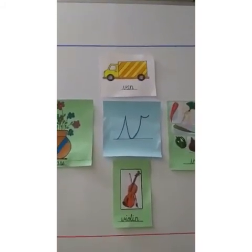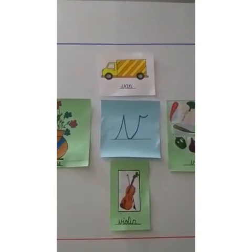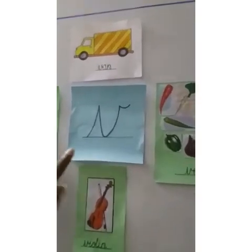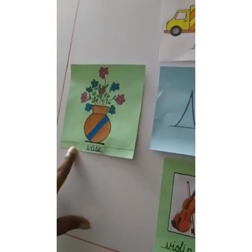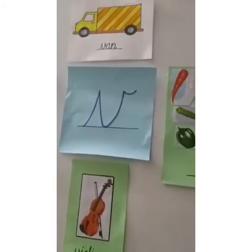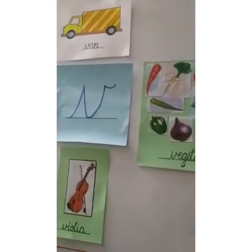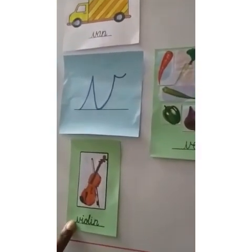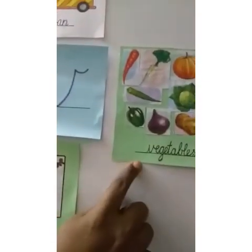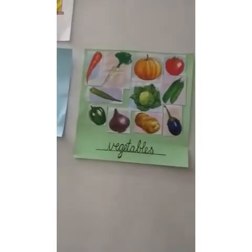So children, once again, we will just revise our letter and our objects. Let me show you. V for vase, to keep flowers. V for van, to take you to school. We have V for violin, to play music so sweet. And here is V for vegetables, to keep you strong and healthy.